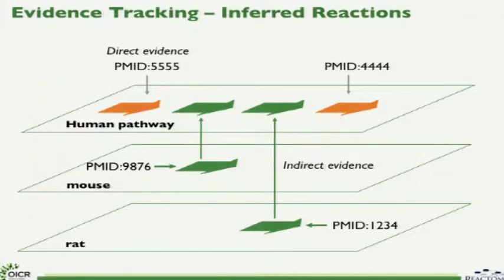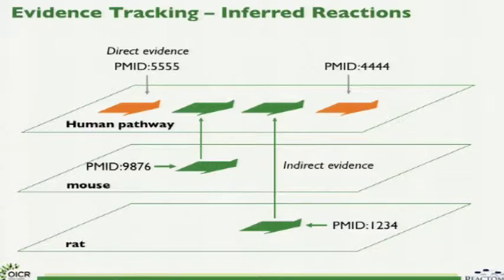Evidence tracking is very important. Our preference is for direct evidence from human experiments; however, often the evidence is from another species due to the lack of experimental information from the human system. In these cases, we manually curate model organism reactions. Orange arrows represent human pathways based on direct evidence from literature, and green arrows represent reactions derived from model organism information. We create a parallel reaction in the non-human species and link it to the human reaction.